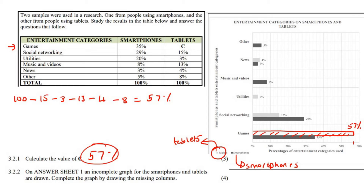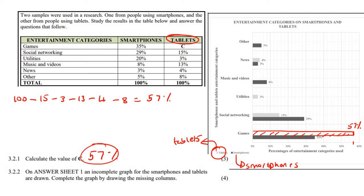For social networking, both numbers are already there. For utilities, we can see the tablet bar is there at 3%, but we need to do the smartphones. The smartphones are always underneath — follow their template. The smartphone utilities is 20%, which is on this line, so we draw up to there and label it 20%.